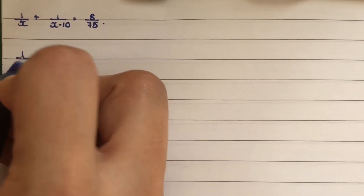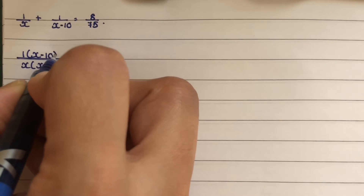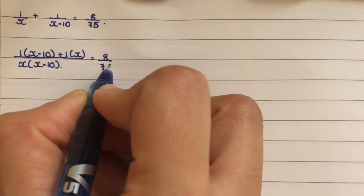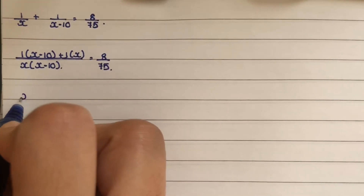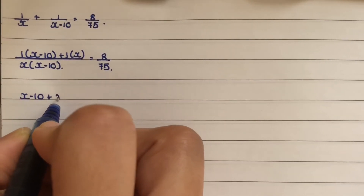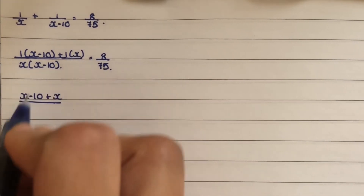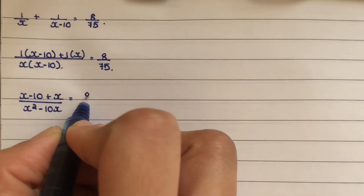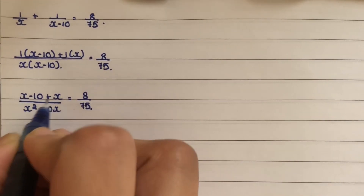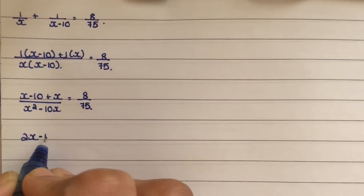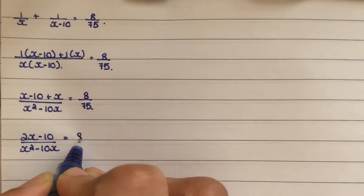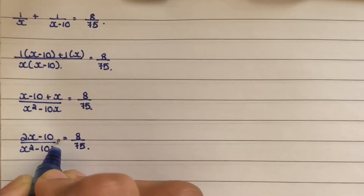To solve this equation, take the LCM of x and x minus 10, which is x into x minus 10. So we get 1 into x minus 10 plus 1 into x all over x into x minus 10, equal to 8 by 75. That simplifies to 2x minus 10 over x squared minus 10x equal to 8 by 75. Next step: cross multiply.